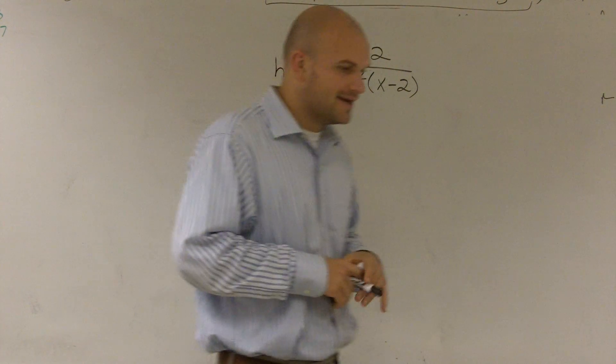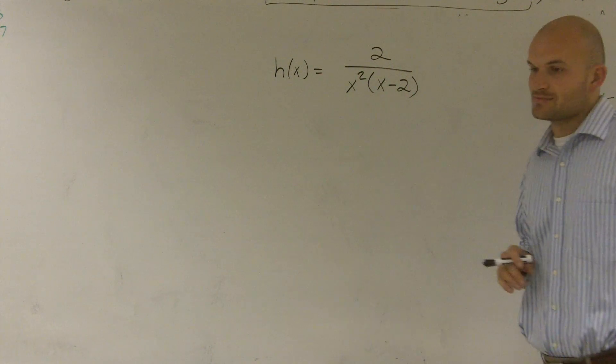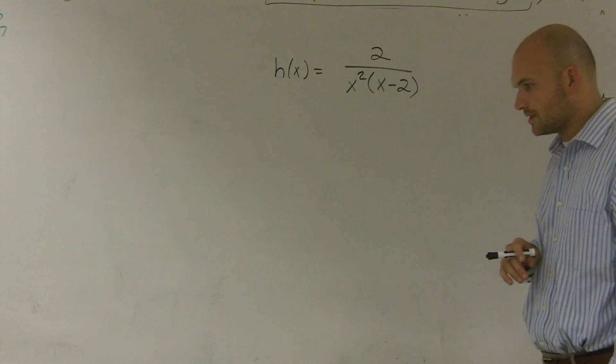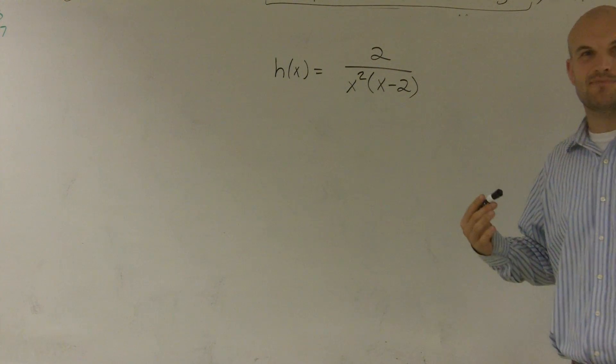So the first thing we want to do is let's go and look and see what our vertical asymptotes is. Now a vertical asymptote is something that's fairly easy because all we're going to do is set the bottom equal to 0.